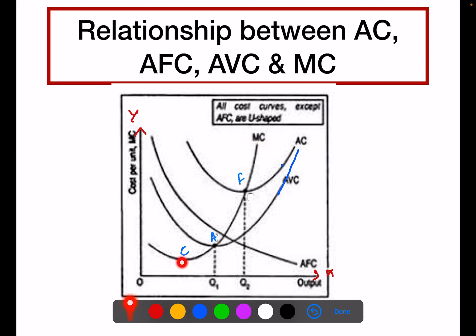MC's minimum point is point C. MC first falls and reaches its minimum at point C, then it starts rising. As it rises, it intersects AVC at its minimum point and then AC at its minimum point.